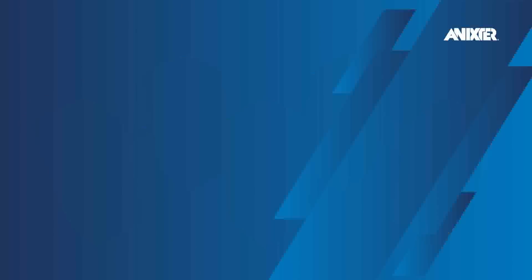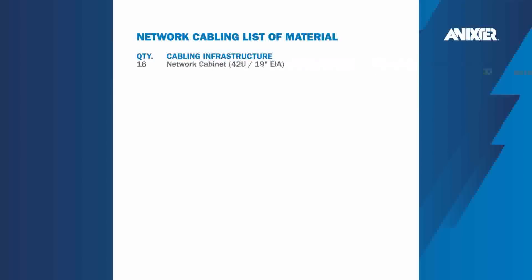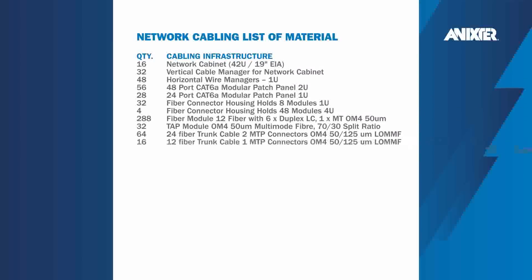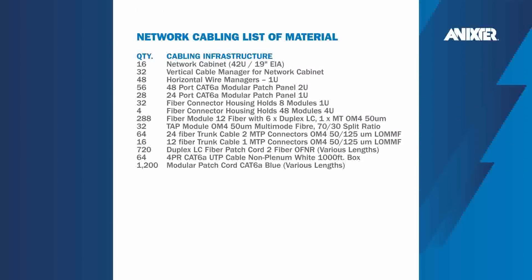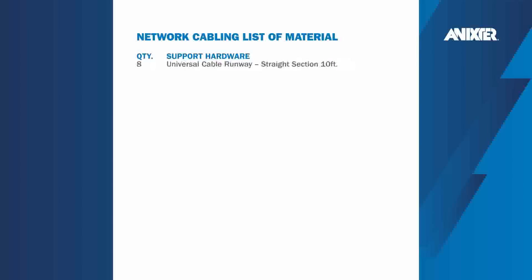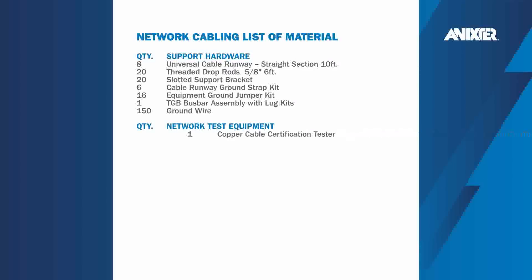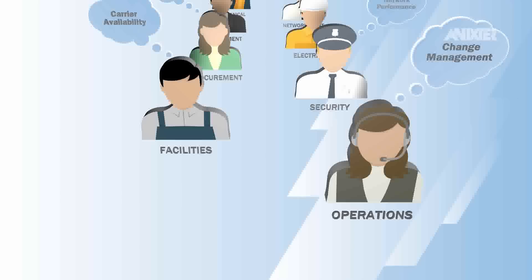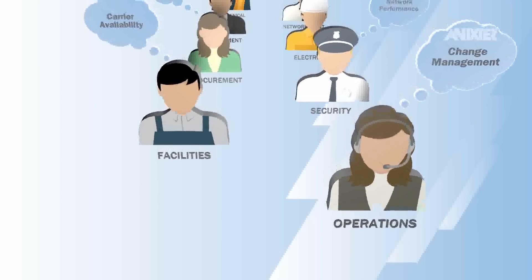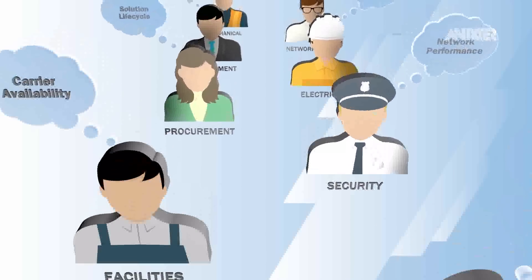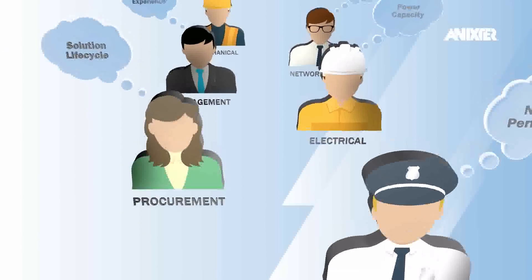A network cabling list of materials should include quality cabling products that can be easily integrated with other network technologies. Different demands on the network cabling infrastructure can result in different stakeholder priorities.